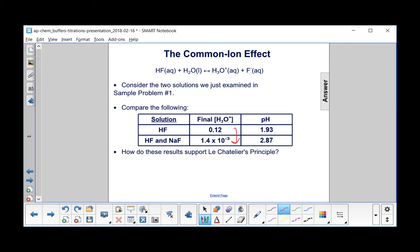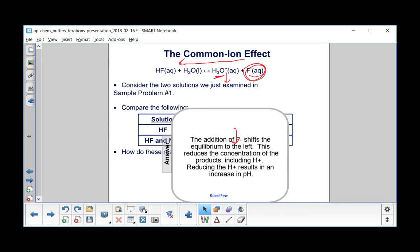How can we use Le Chatelier's principle to support our results here? By adding this F minus to the solution, which we did in the second part, we shift the equilibrium back toward the reactants, toward the left. In doing so, we see this concentration decrease. If we decrease the H3O plus concentration, we would expect the pH to increase. The addition of F minus shifts the equilibrium to the left. This reduces the concentration of the products, including the H plus. Reducing the H plus results in an increase in pH.